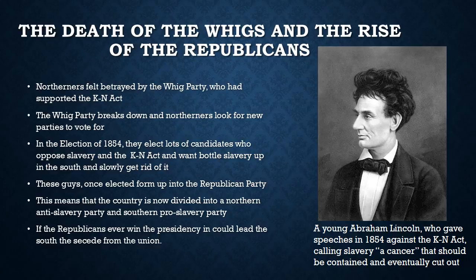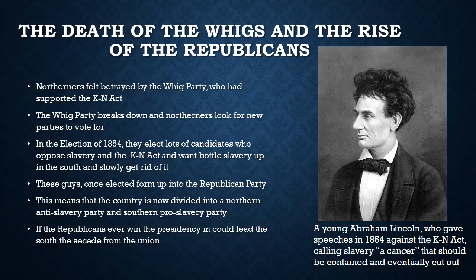In the election of 1854, where they were just electing people to go to Congress, the North elected a lot of candidates who opposed slavery and the Kansas-Nebraska Act and who wanted to bottle slavery up in the South and slowly get rid of it. These candidates, once elected, grouped together to form a new party called the Republican Party. This meant the country was now divided into a northern party — the Republicans, who were anti-slavery — and a southern pro-slavery party, the Democrats. The North and South were divided not only in terms of culture and economy, but now politically as well.